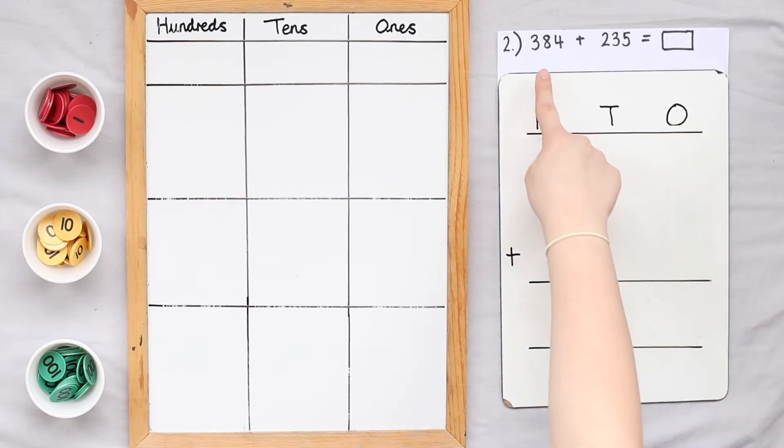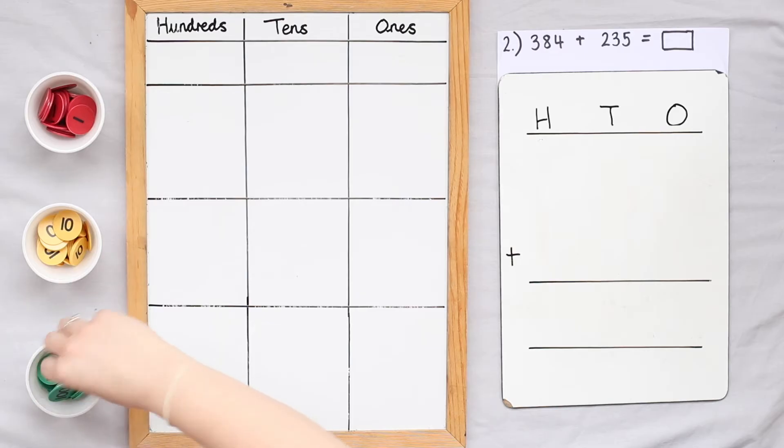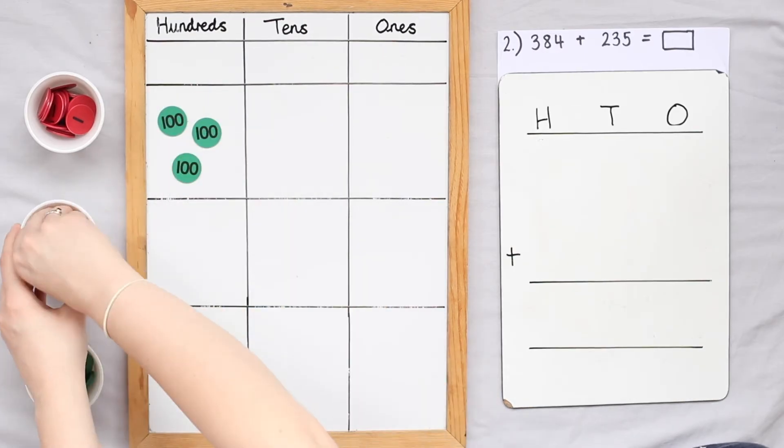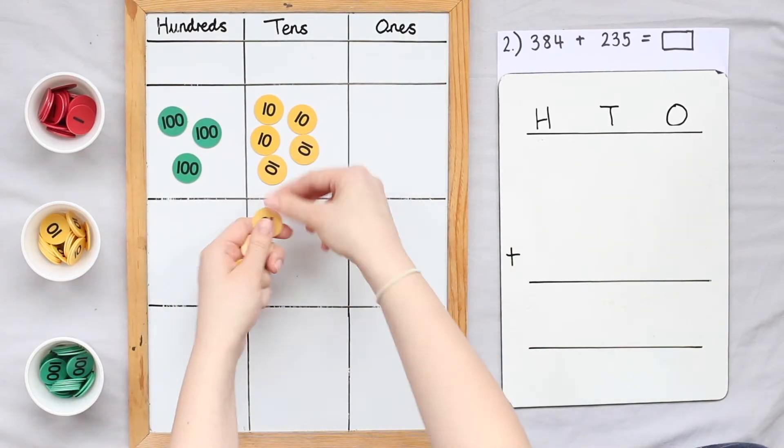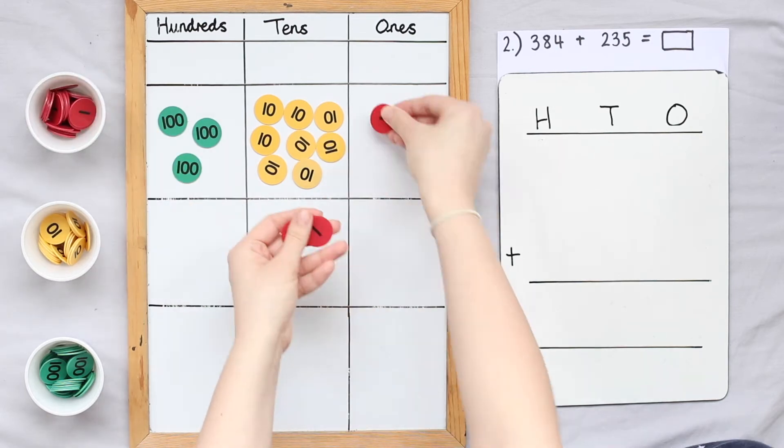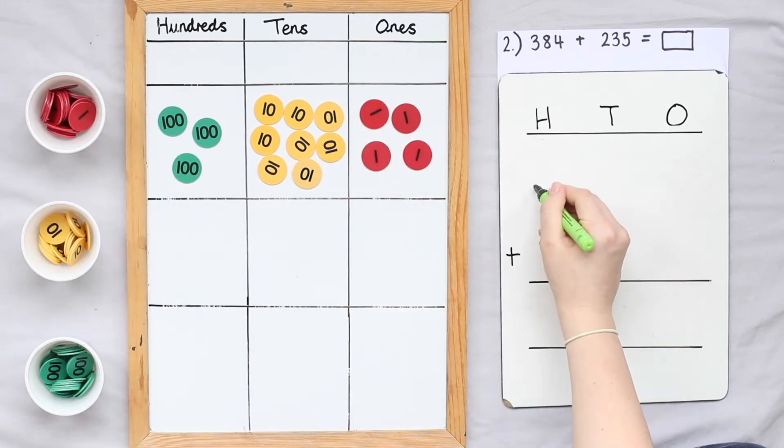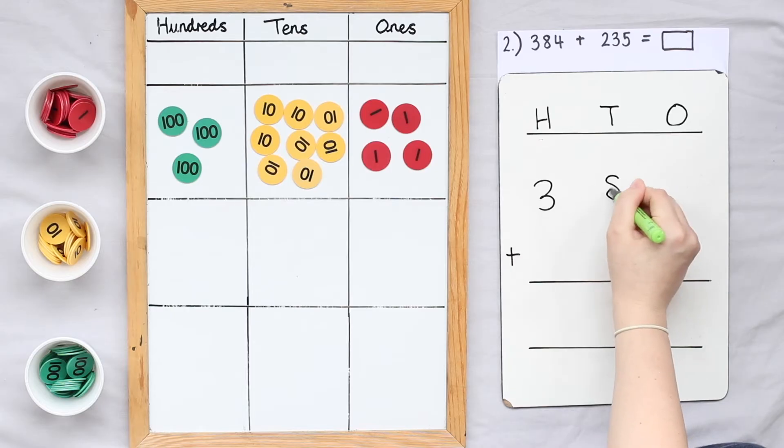To start we'll partition the number 384 into hundreds, tens and ones. There are three hundreds, eight tens and four ones. Now I've represented this with my counters. I'm going to represent this in my algorithm. I have three hundreds, eight tens and four ones.